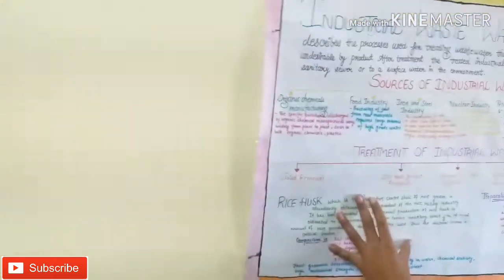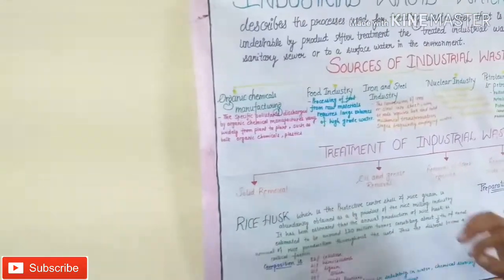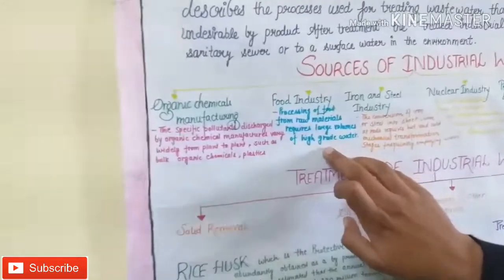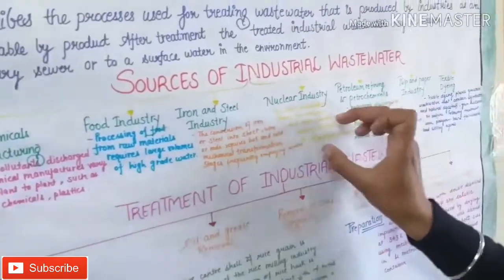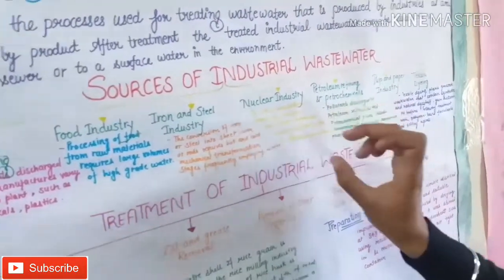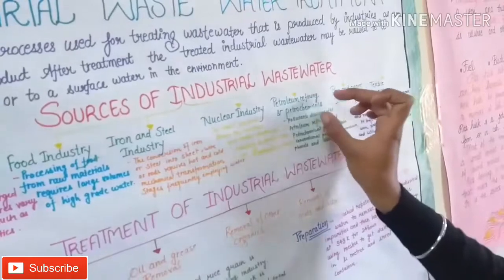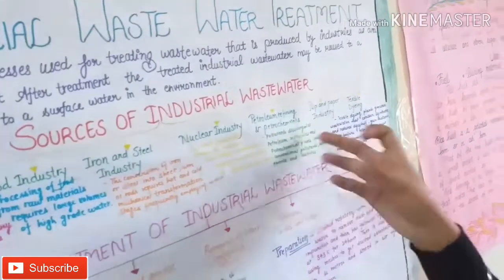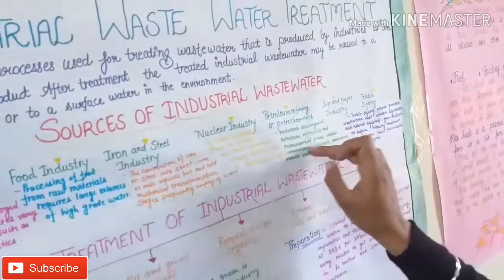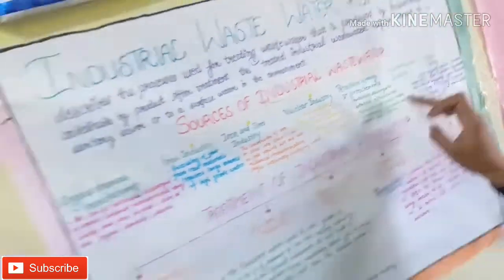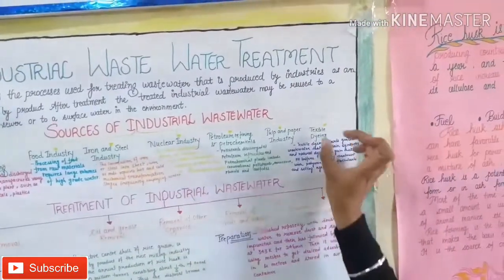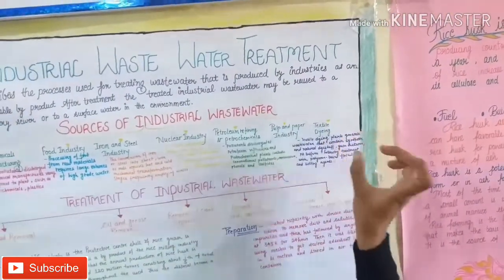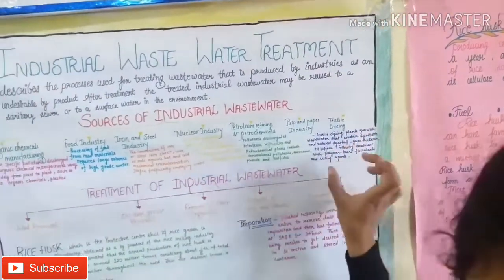We have used waste water from the food industry, from iron and steel industries, and from nuclear industries. Then we have made petroleum refining, where chemicals are left in the water. This is also used in paper industries. The waste is in the textile industry, where they dye the textiles and colored water remains inside.